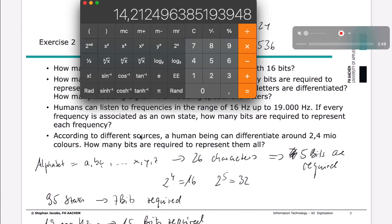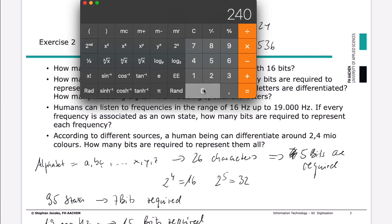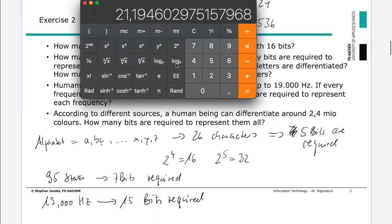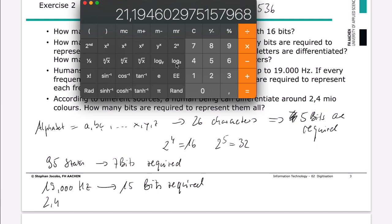And one more. If we have 2.4 millions of colors, how many bits are required to represent them all? So let's type in 2.4 million. Again, I'll take this logarithm and you can see 21 isn't sufficient. So I need 22. So 2.4 million colors require 22 bits.